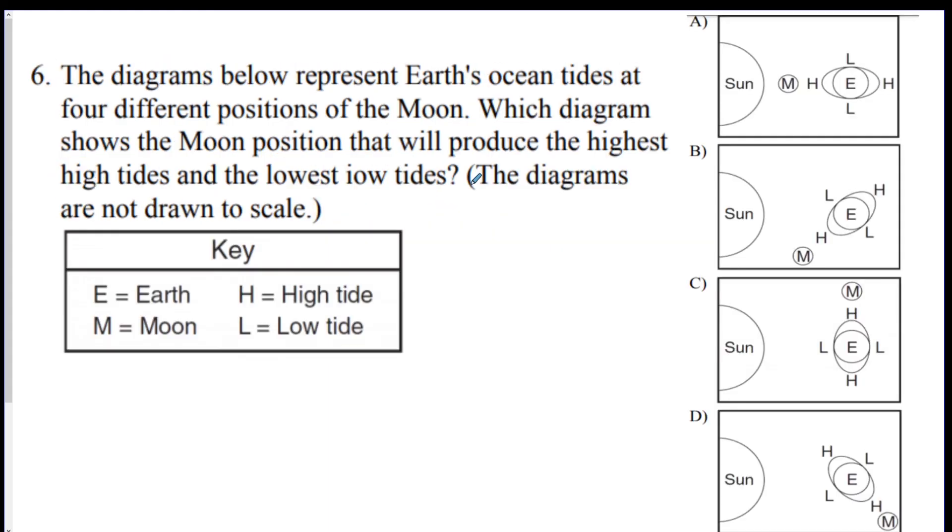Number six. The diagram below represents tides at four different positions. Which one shows the Moon's position that will produce the highest high tides and the lowest low tides? If you see highest high tides, lowest low tides, this is a spring tide. And that happens at a full Moon and a new Moon, so you would pick that one. This is a spring tide. This is neither. This is a neap tide. And this is neither.